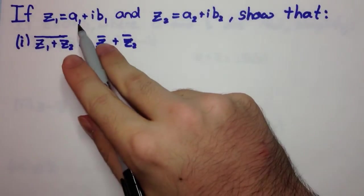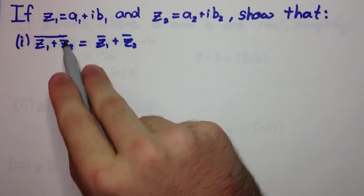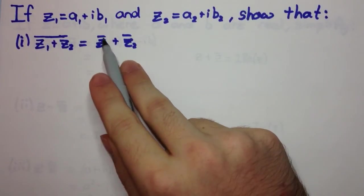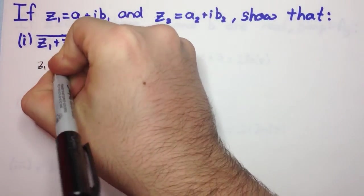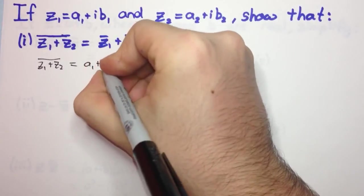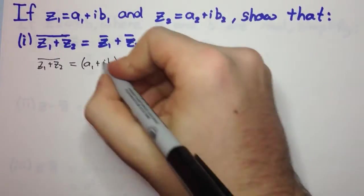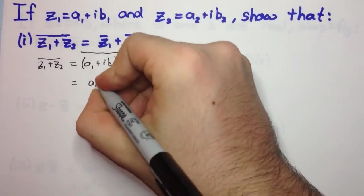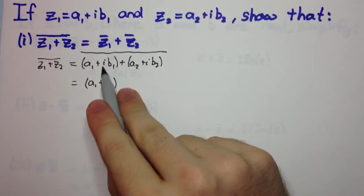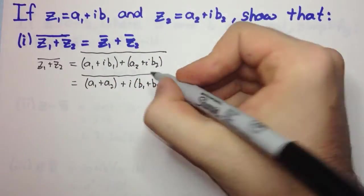Now we'll have a look at something else. If z1 equals a1 plus i·b1, and z2 equals a2 plus i·b2, we need to show that the conjugate of z1 plus z2 is equal to z1 bar plus z2 bar. Looking at z1 plus z2 all bar, that's the conjugate of a1 plus i·b1 plus a2 plus i·b2, and we're taking the conjugate of all of that.